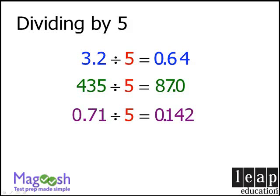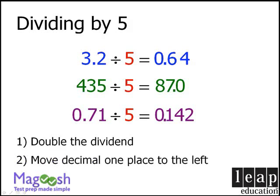So, to divide by 5, our first step is to double the dividend. And our second step is to take our decimal point and move it one space to the left.